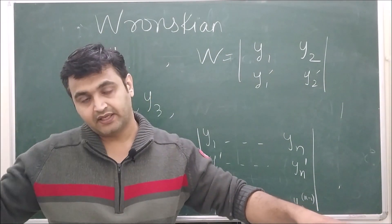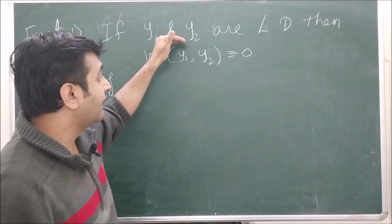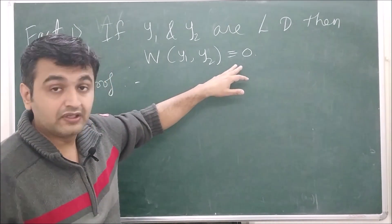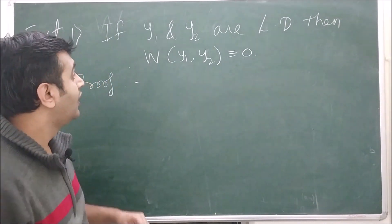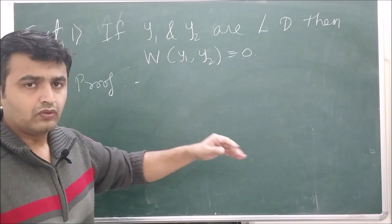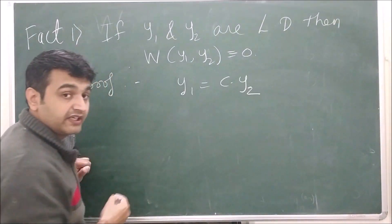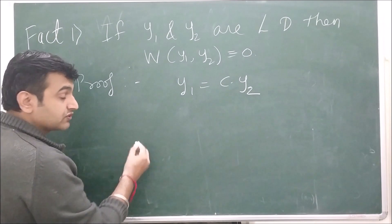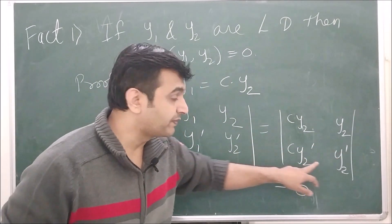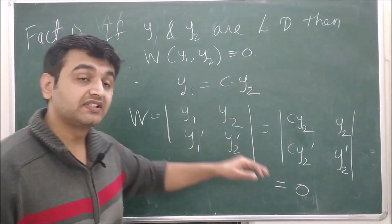Now let's see the connection between linear independence/dependence and the Wronskian. If y1 and y2 are linearly dependent functions, their Wronskian is zero everywhere. The proof: dependent means y1 = c·y2 for some constant c. Substituting into the Wronskian determinant gives a matrix with proportional rows, whose determinant is zero.